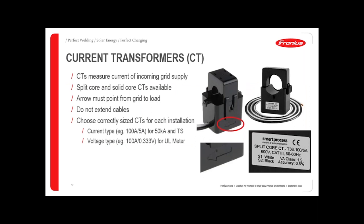We need to make sure that if we are using the current transformers, we're using the correct ones for the right meter and the right sizing ratio. The CTs measure the current from your incoming supply — they clamp around the incoming cables, one per phase. I'd always recommend using split core, which are hinged so you can clamp them around. If you have solid core, you have to disconnect the cables and feed them through the solid CT, so it's always better to go for split core. It's very important to make sure each CT has an arrow printed on it, and that that arrow is in the direction from the grid to the load within the building.